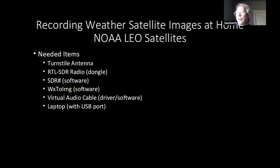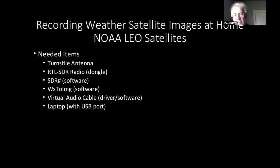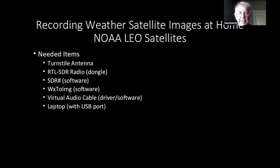These are the satellites we're going to observe with this ground station. What's really nice is the signals are very strong and easy to receive, giving really good resolution. The items you need are: number one, a turnstile antenna; an SDR radio in the dongle style; SDR Sharp software designed for these SDR radios; Weather to Image software; a virtual audio cable that takes data received by SDR Sharp and feeds it to Weather to Image — basically a software audio cable connecting the receiver to the weather software.